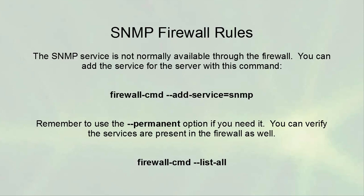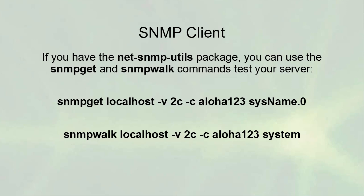In addition to having the service running, you need to make sure it can get through the firewall. Add the service with: 'firewall-cmd --add-service=snmp'. To make it permanent, add the '--permanent' option. You can verify the service is in the active firewall using 'firewall-cmd --list-all', which will show which services are currently allowed.